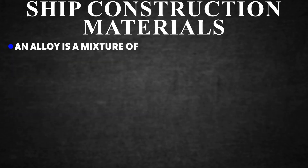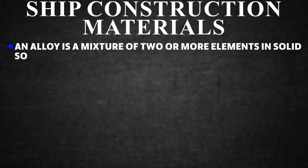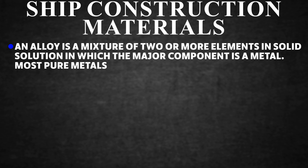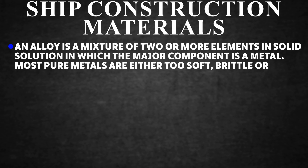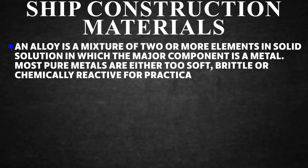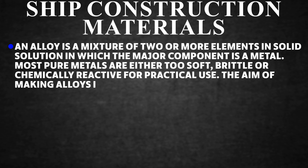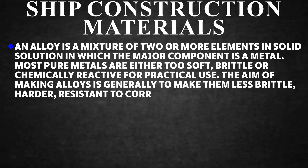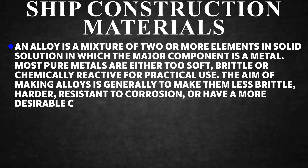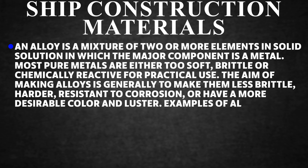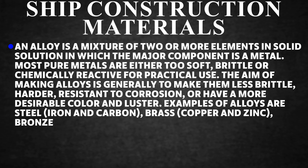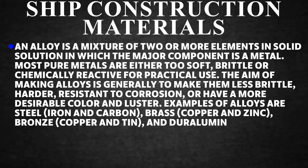An alloy is a mixture of two or more elements in solid solution in which the major component is a metal. Most pure metals are either too soft, brittle, or chemically reactive for practical use. The aim of making alloys is generally to make them less brittle, harder, resistant to corrosion, or to give a more desirable colour and luster. Examples of alloys are: steel (iron and carbon), brass (copper and zinc), bronze (copper and tin), and duralumin (aluminium and copper).